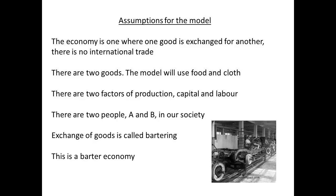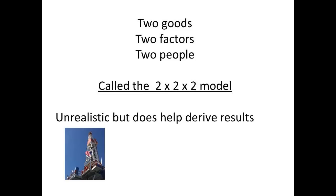The goods will be exchanged one for another. There is no outside trade. You may see this exchange of goods referred to as a barter economy. Because we are dealing in twos — two goods, two factors and two people — this is called the 2x2x2 model. It may not be very realistic, but we can use it to derive results.